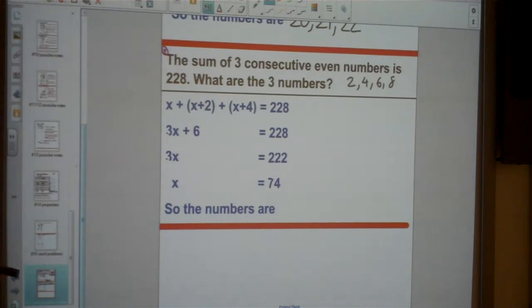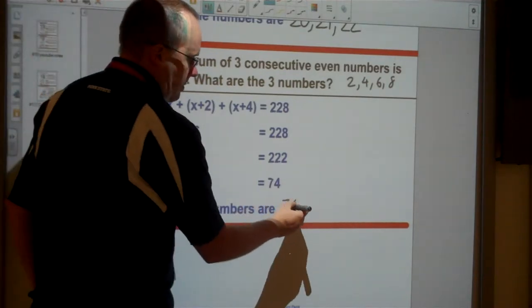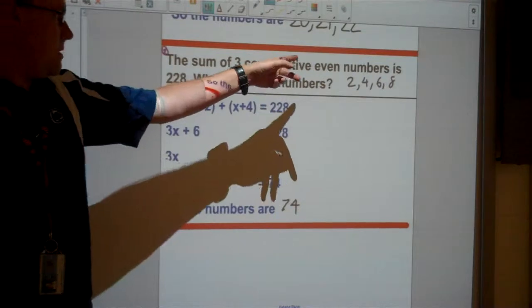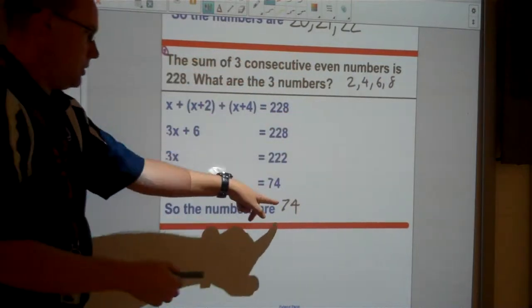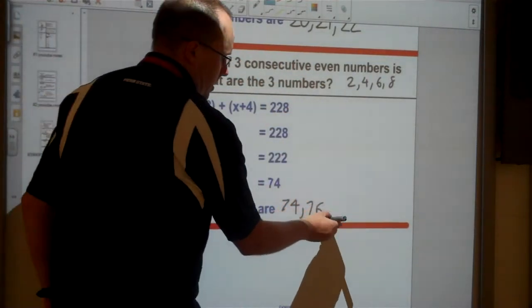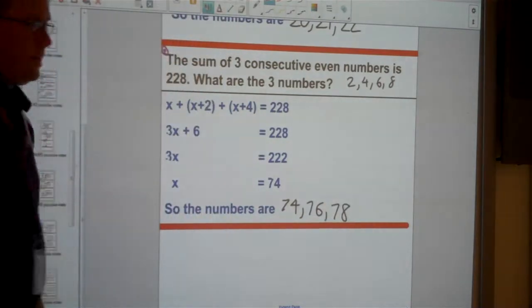Now you've got to be careful on this one. Once you know the first number is 74, a lot of people think, oh, 75, 76. Remember we're doing even numbers this time. So they go up by 2. So if 74 works, then it's going to be 76 and 78.